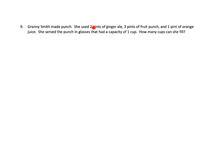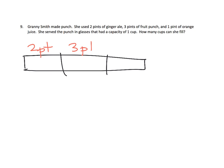So good old Granny Smith made punch. She used two pints of ginger ale, three pints of fruit punch, and one pint of orange. So we have, and I'm not drawing it to scale, but three portions or three types of juice. We've got two pints of ginger ale. We've got three pints of fruit punch, and one pint of orange juice.